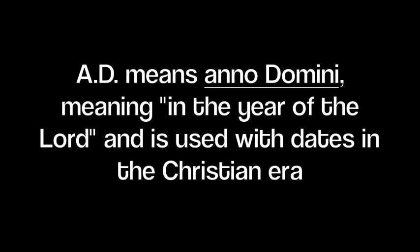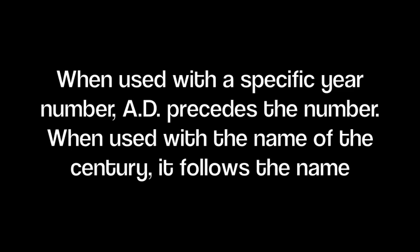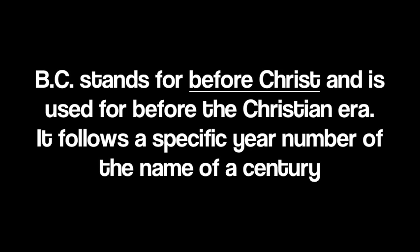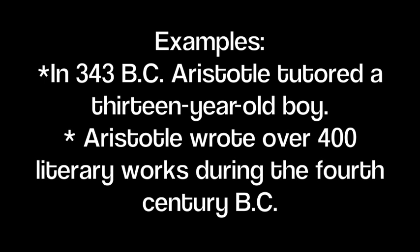Time. Abbreviate the frequently used era designations. AD means Anno Domini, meaning in the year of the Lord, and is used with dates in the Christian era. When used with a specific year number, AD precedes the number. When used with the name of the century, it follows the name. Examples: between AD 61 and AD 63, Queen Boudica led a war. The Romans finally defeated Queen Boudica and controlled Britain until the 6th century AD. BC stands for Before Christ and is used for before the Christian era. It follows a specific year number or the name of a century. Examples: in 343 BC, Aristotle tutored a 13-year-old boy. Aristotle wrote over 400 literary works during the 4th century BC.